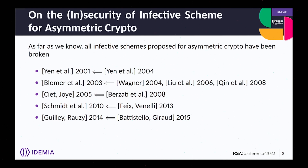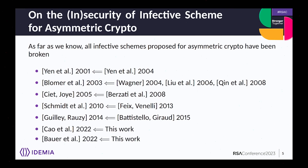As far as we know, all infective countermeasures on asymmetric crypto have been broken within one to three years after publication. All those countermeasures concern only RSA or different versions of RSA. In this work, we tackle the two countermeasures proposed last year to protect deterministic ECDSA.